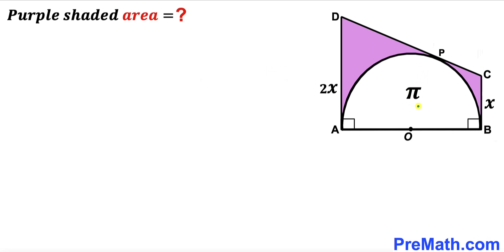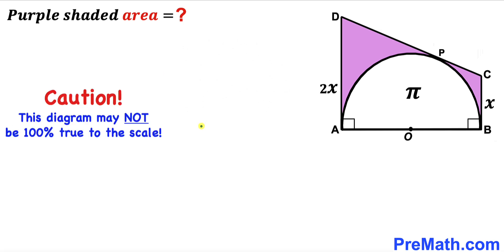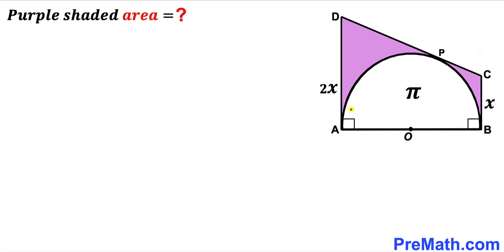Welcome to PreMath. In this video we have a semicircle fully inscribed in a trapezoid ABCD, as shown in the diagram, such that the area of the semicircle is π square units, side AD is 2x, and side BC is x. Our task is to calculate the area of the purple shaded region — the two shaded areas combined. Please note the figure may not be 100% true to scale. Let's get started.